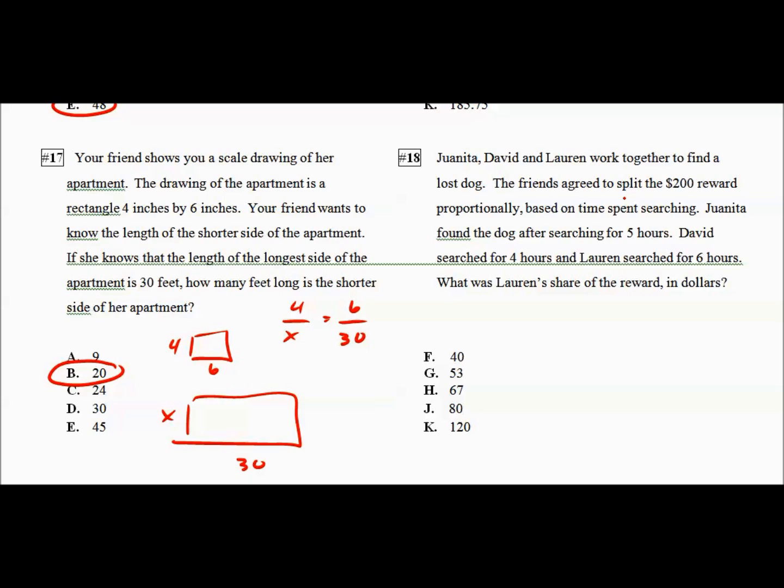This is a nice problem. I would definitely take a second and work it out. But long story short, how much money should Lauren get? Well, we don't know. It's out of 200. But we do know she did 4 out of the... Whoops. My bad. 6 out of 4 plus 5 plus 6. 15 hours. Cross multiply. I actually have to get a calculator out now. I've been doing everything in my head so far. She should get 80 bucks.